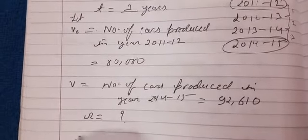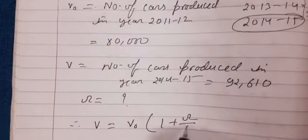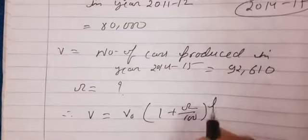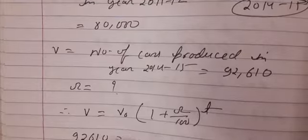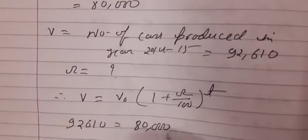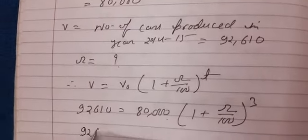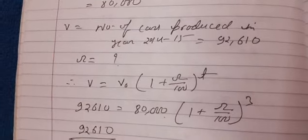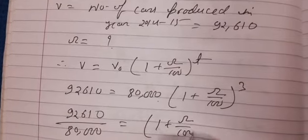We will use the formula for growth rate. V is equal to V₀(1 + r/100)^t. Now, 92,610 equals 80,000(1 + r/100)^3. We will transfer it: 92,610 divided by 80,000 equals (1 + r/100)^3. Zeros cancel, and this cube will become cube root on this side.